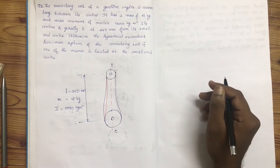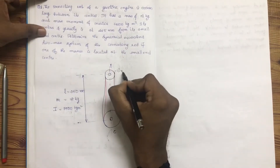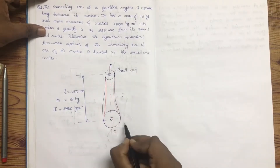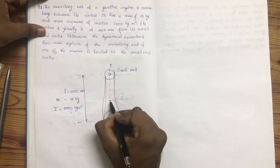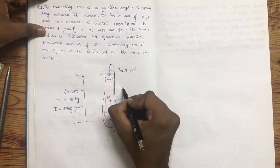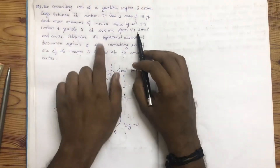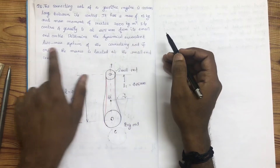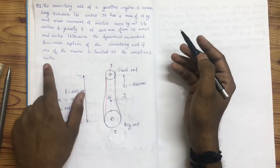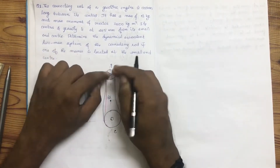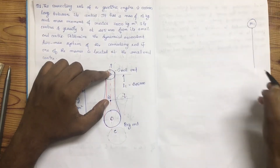Its center of gravity is at 225mm from the small end. We need to determine the dynamically equivalent two-mass system of the connecting rod, where one of the masses is located at the small end center.